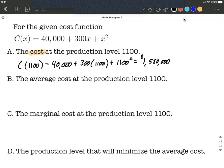All right, next up the average cost, which I'm going to use AC to represent. We can say that's going to be whatever our cost function is divided by however many items we've produced. So C(x) divided by x. In our case we can say that's 40,000 plus 300x plus x² all divided by x. That can represent our average cost.